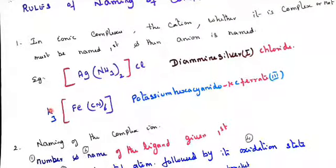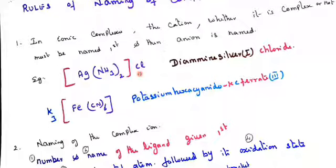For this case, this is the cation and the full square bracket is the anion. When you remove one Cl minus, it acquires plus one. When you remove three potassium, it acquires three minus — like that we can determine the charges. Whichever comes first, whether a square bracket or a counter ion, we should give first priority to the first one. So this square bracket has come first, so it is considered the cation, and the second one is considered the anion.